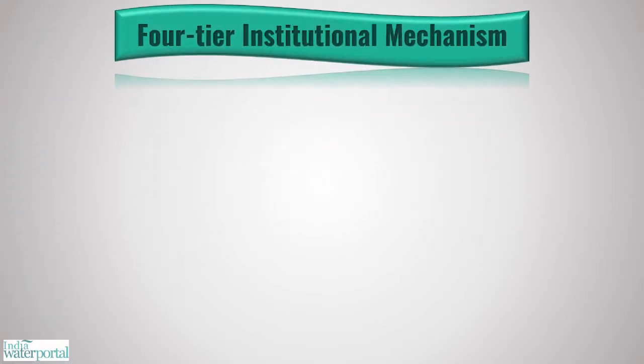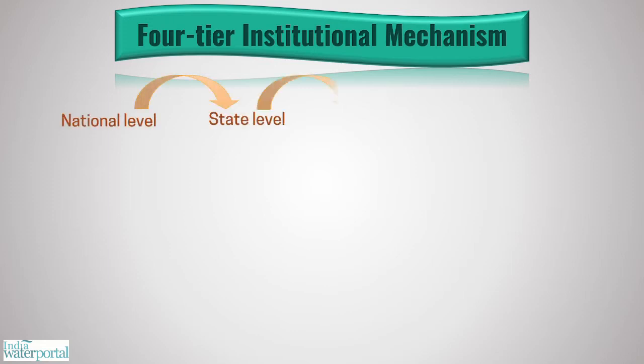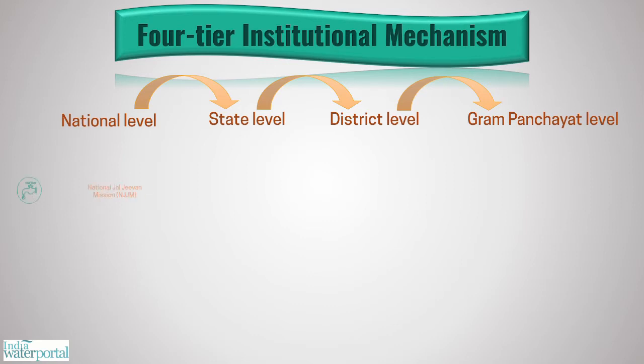For the successful implementation of Jal Jeevan Mission, a four-tier institutional mechanism would be set up: national level, state level, district and village level. The national level is called the National Jal Jeevan Mission.